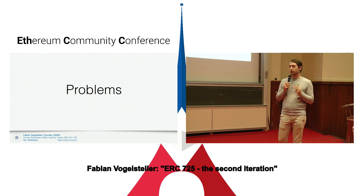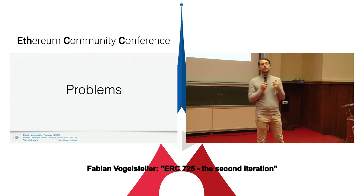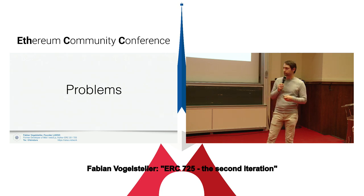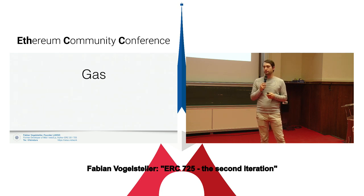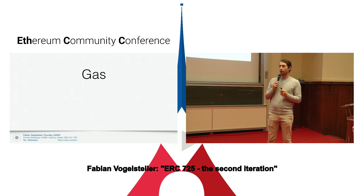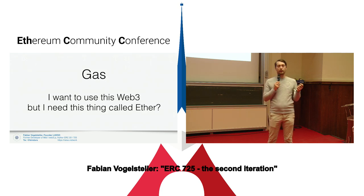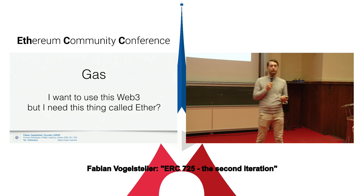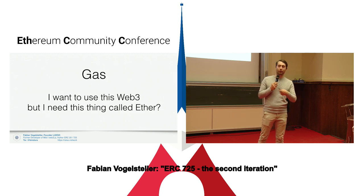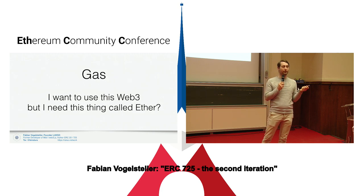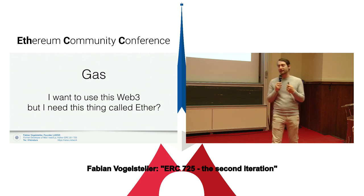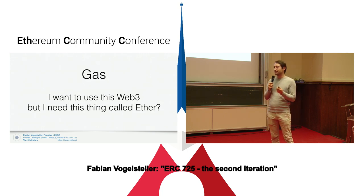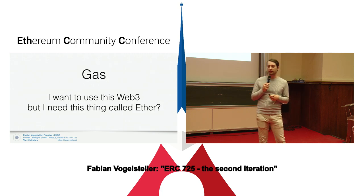We have two main problems with using the Ethereum network, or technically any blockchain. The first is gas. The problem with gas is that you want to do anything on the blockchain and you have to figure out what Ether is — especially for newcomers. They come in, they want to move a token, and then they realize they need Ether first, but nobody told them. So the gas problem is a pretty big deal of why the UX is so bad.